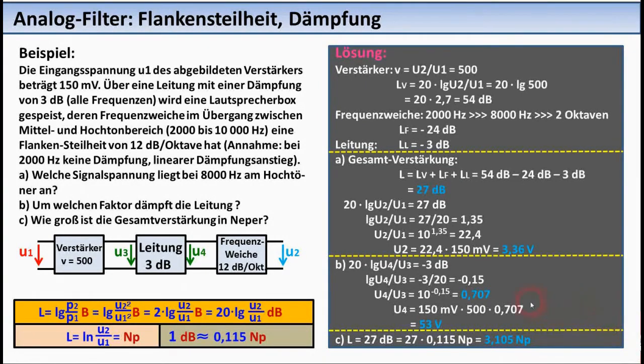Here you can see again in the line, the attenuation of 3 dB is equivalent to a factor of 0.707, as we have already seen elsewhere.